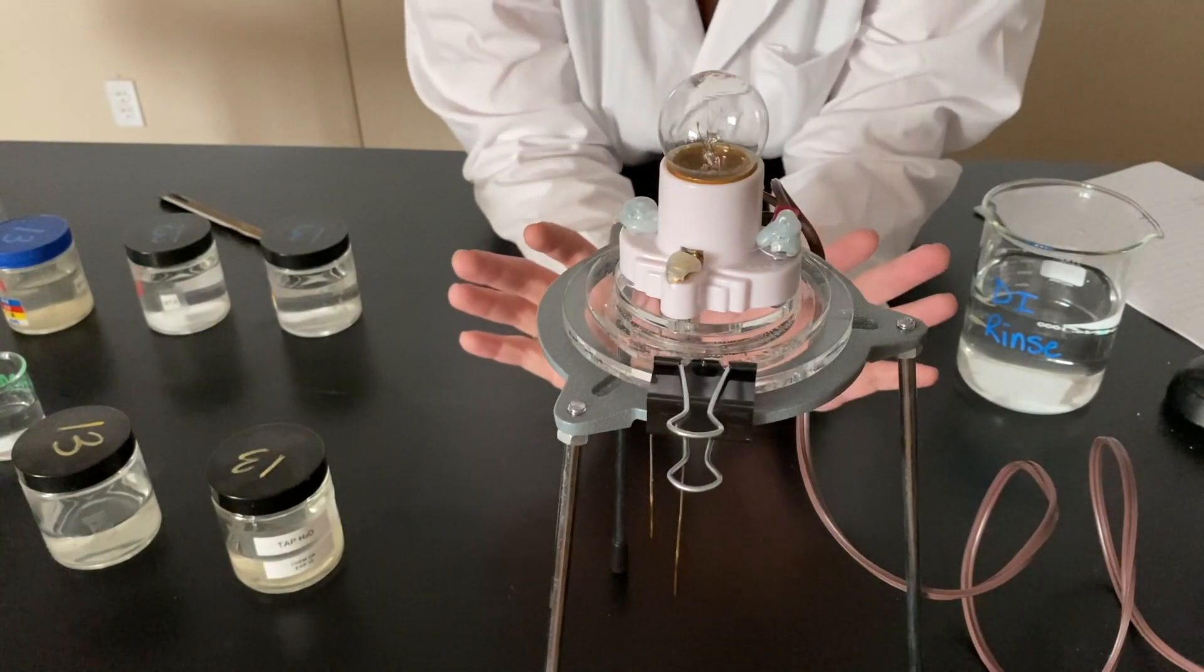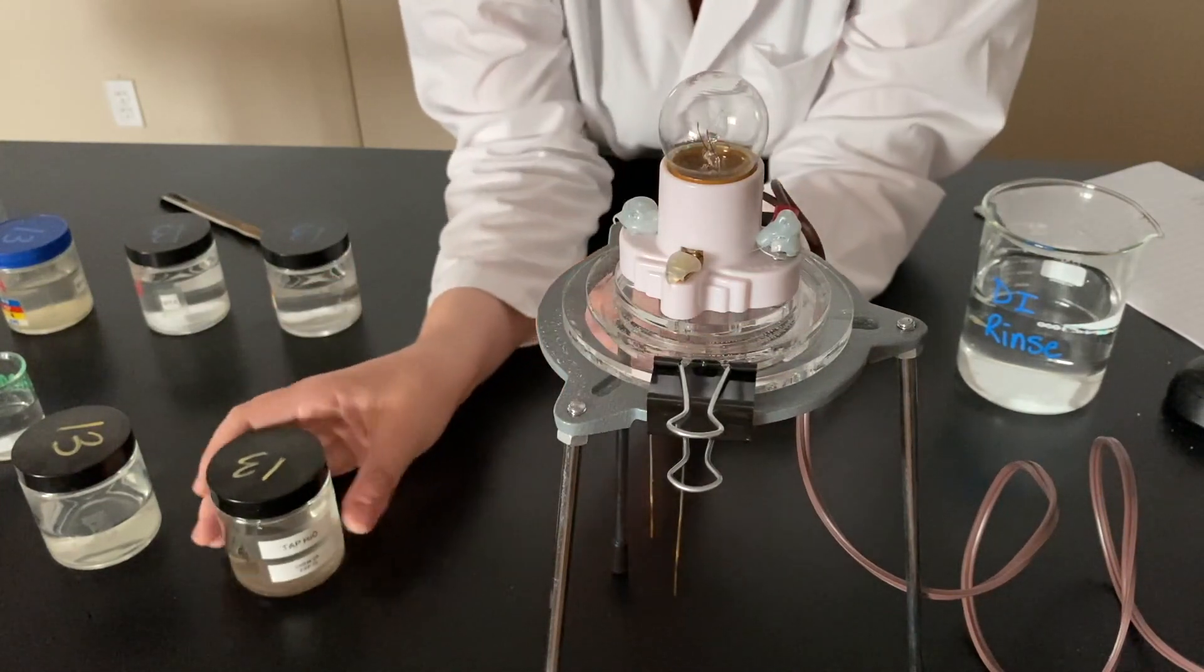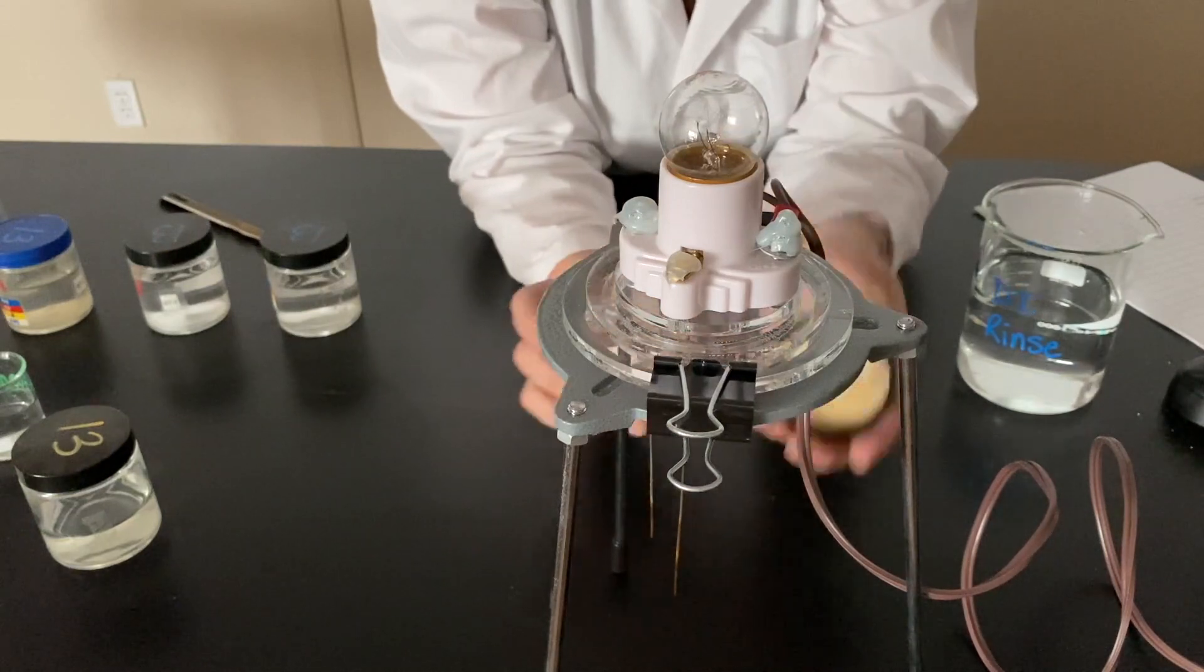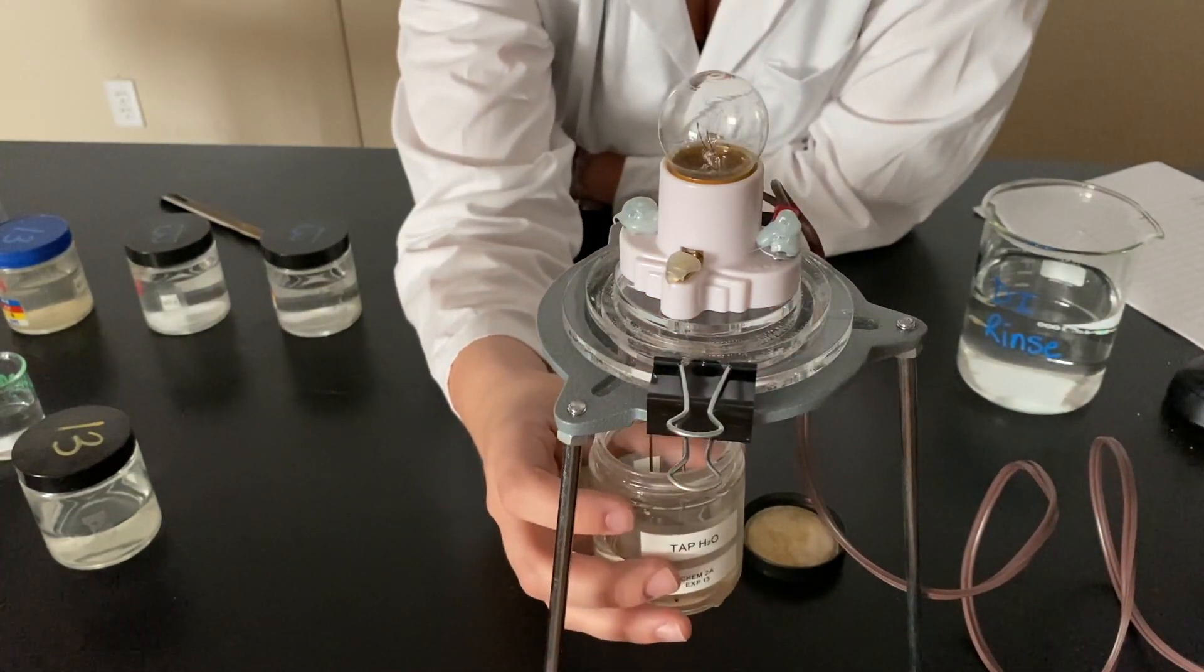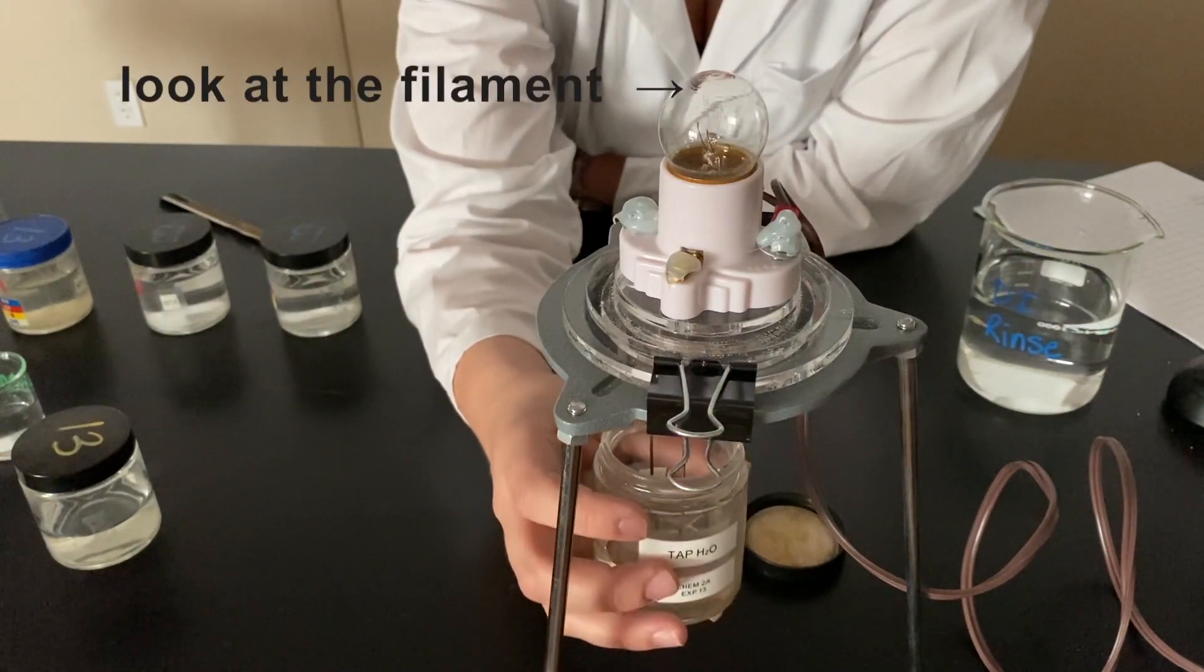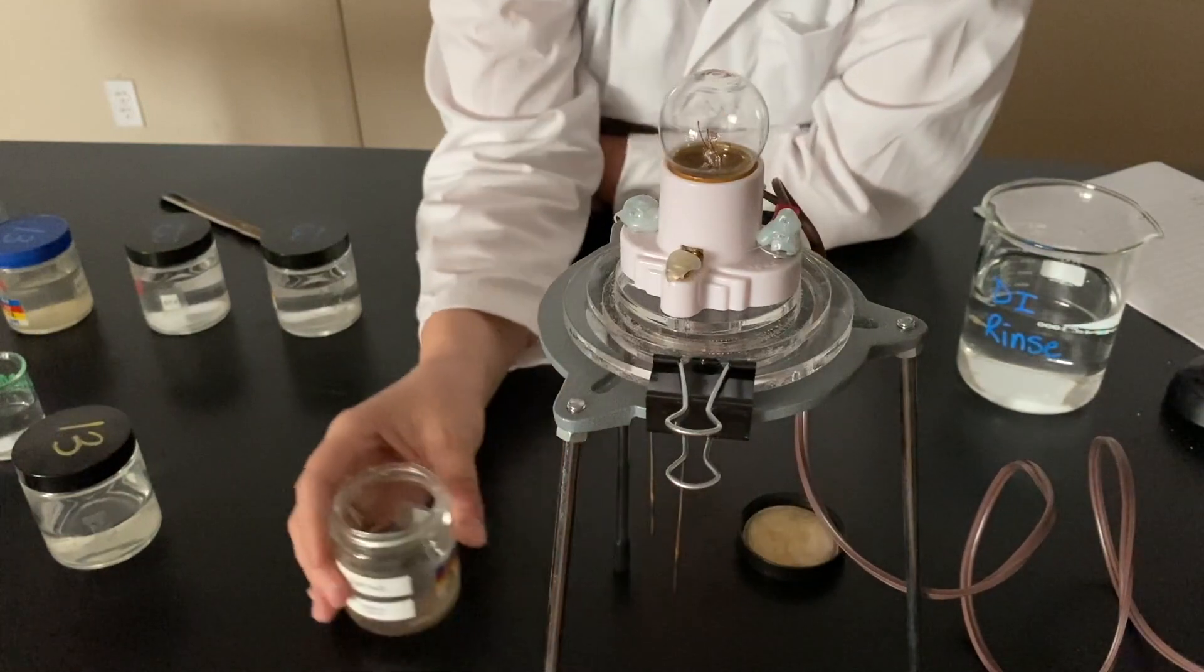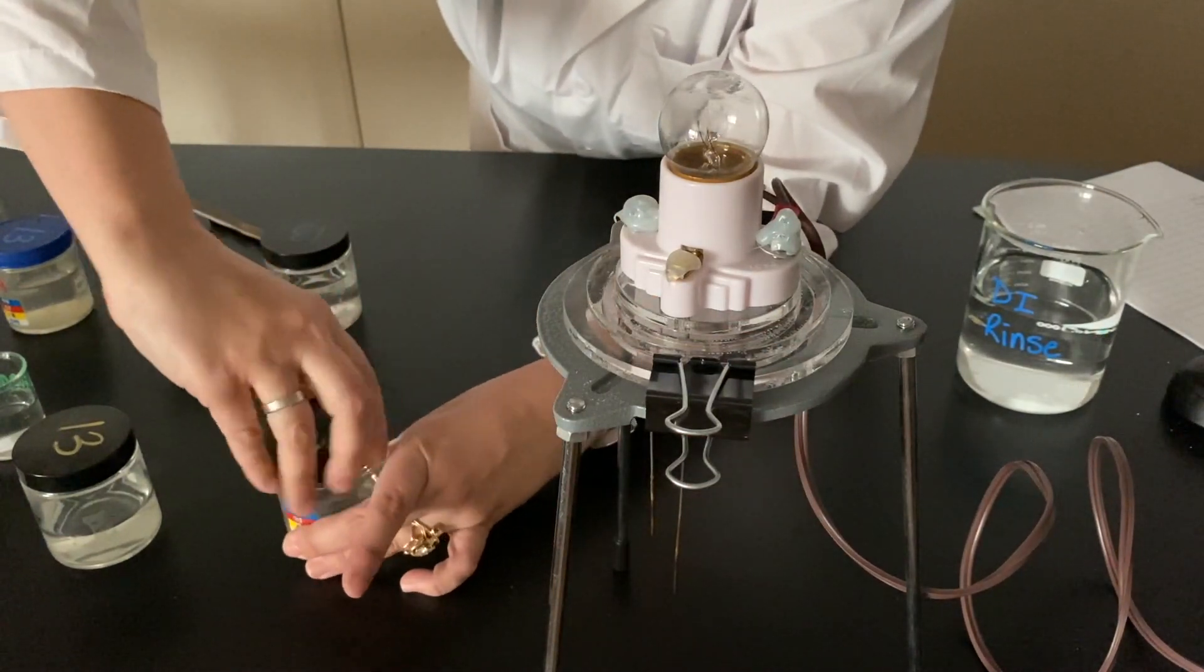All right. So turn the lights off so that we'll hopefully be able to see any weak electrolytes light up. So this is just regular old tap water. You can see it light up just slightly, right? So it would be a weak electrolyte. Maybe I shouldn't give you answers. So there you go. That's tap water.